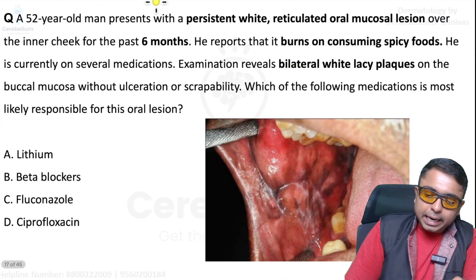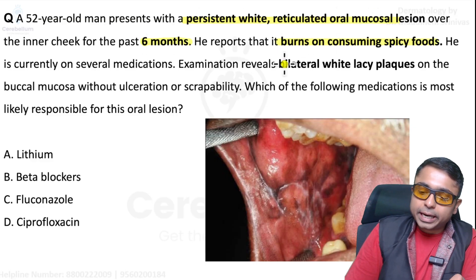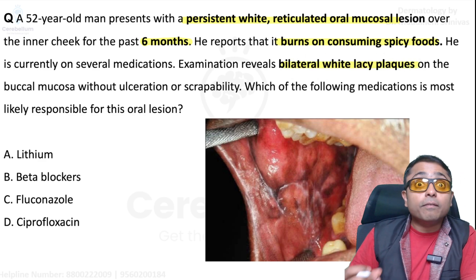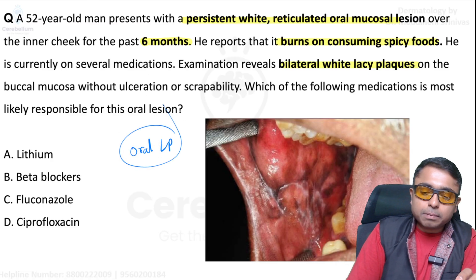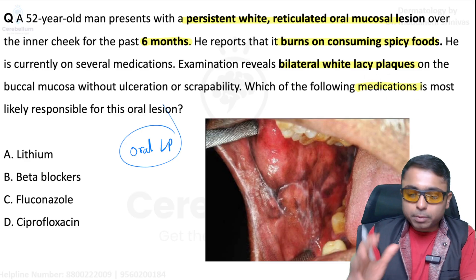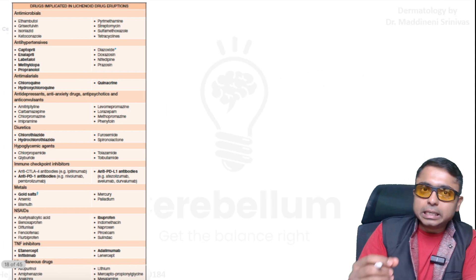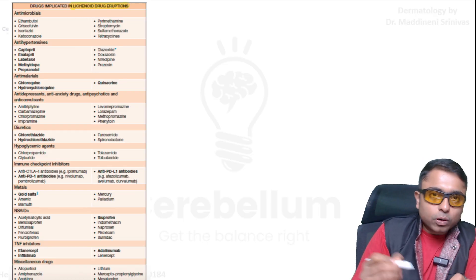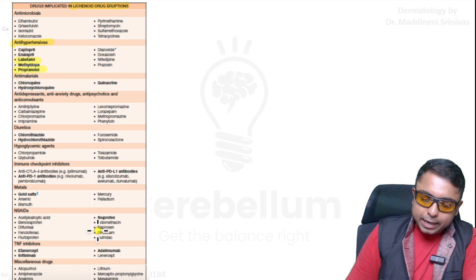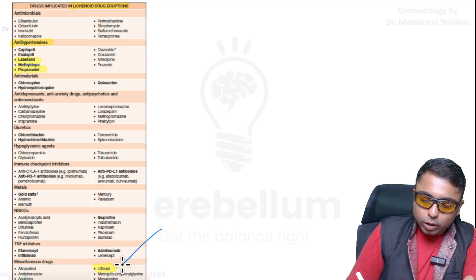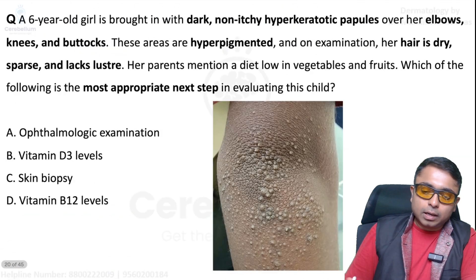Next question: persistent white reticulated oral mucosal lesions for six months, burning sensation on spicy food intake, bilateral white lacy lesions — you have diagnosed it as oral lichen planus. The next step asks what medication is most likely responsible. Remember, both lithium and beta blockers are associated with lichen planus, but beta blockers are more important. As seen in this Bologna table, labetalol and propranolol are in bold, indicating more important causes. Lithium is listed but not in bold.